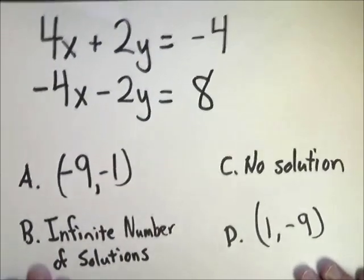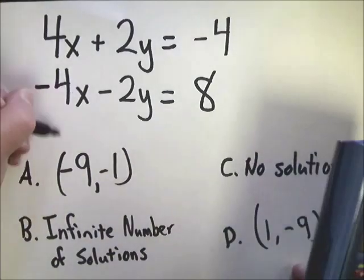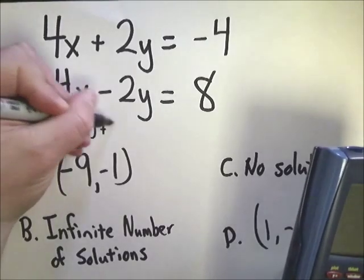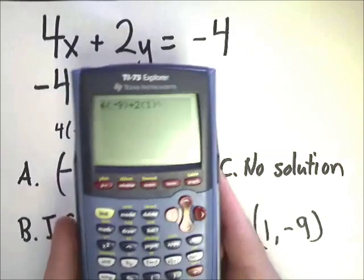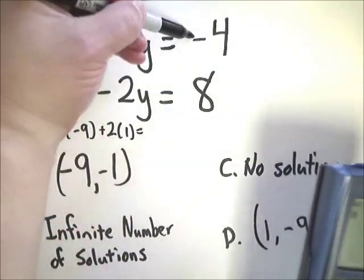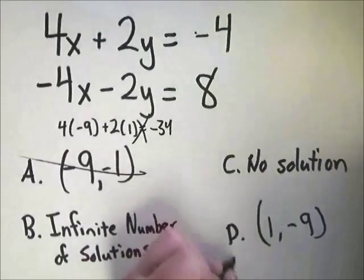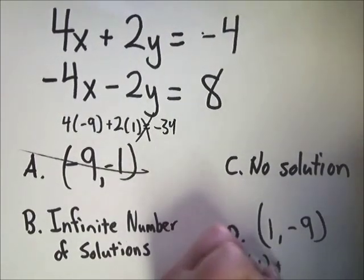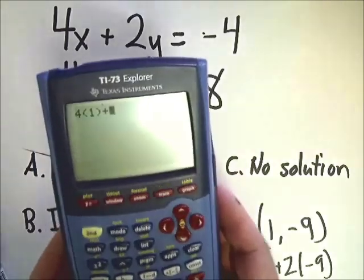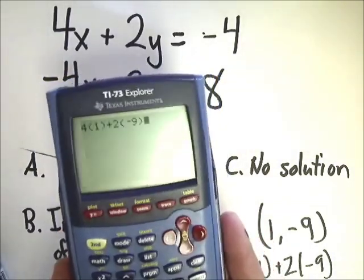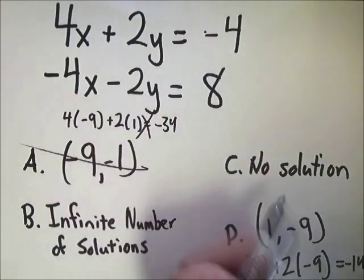So we have this problem. What I'm going to do is try to plug these in first and see if that works. And if it doesn't, then I'm going to take a look at what's available to me. So I'm going to try doing four parentheses negative nine plus two parentheses one. I hit enter and it gives me negative 34, but it's supposed to give me negative four. That's not right. So this one can't be the answer. Let's try down here. This one would be four parentheses one plus two parentheses negative nine. I type all that in and it gives me negative 14, but it's not supposed to give me negative 14. It's supposed to give me negative four. So I know this isn't it either.